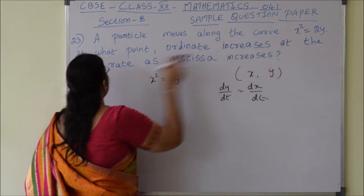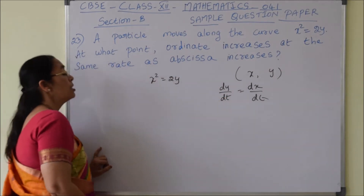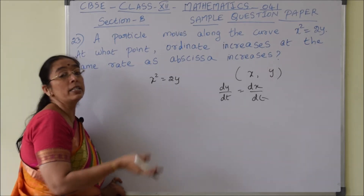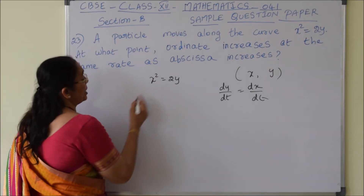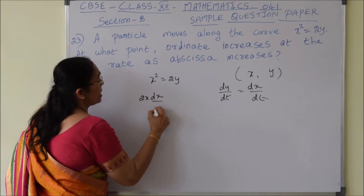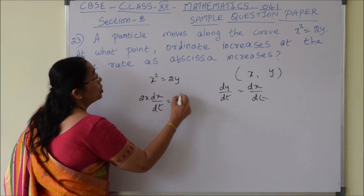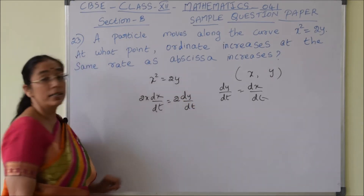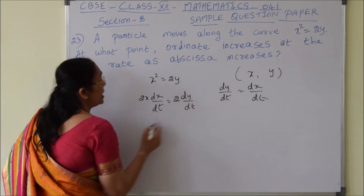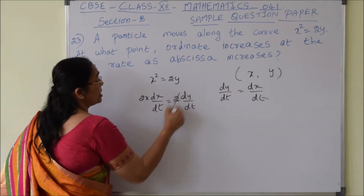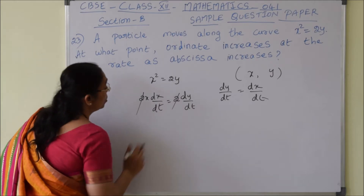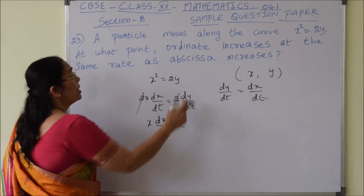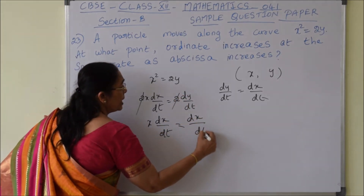Ordinate increases at the same rate as abscissa increases. So first we differentiate both sides with respect to t: 2x into dx/dt equals 2 into dy/dt. Now it is given that dy/dt equals dx/dt, so we can replace dy/dt with dx/dt.